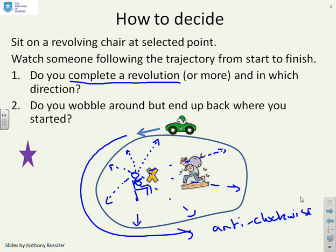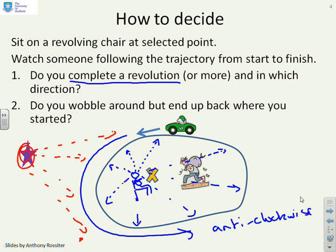Alternatively, if you were sat on a chair where this purple star is, you would first look this way, and following these dotted lines, once you get to the bottom one you would start moving back up again. So what you're doing on this chair is oscillating backwards and forwards, but always ending up back in the same place. So you'll see you haven't gone all the way around.